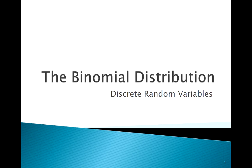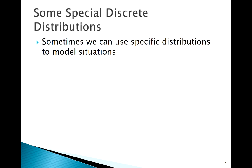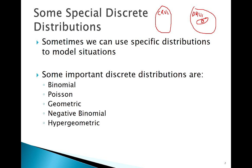Welcome back. Today we're going to be discussing the binomial distribution. We know how to deal with discrete random variables in general, but sometimes we may recognize specific situations where we can apply special distributions. We have continuous and discrete random variables, and the special case we're focusing on today is the binomial — a special case of discrete random variables.